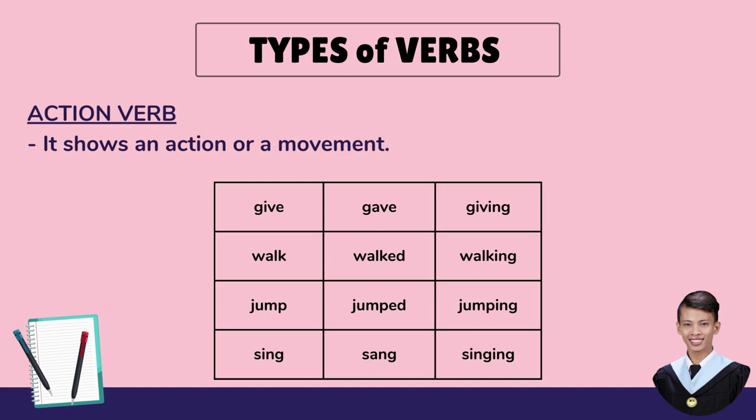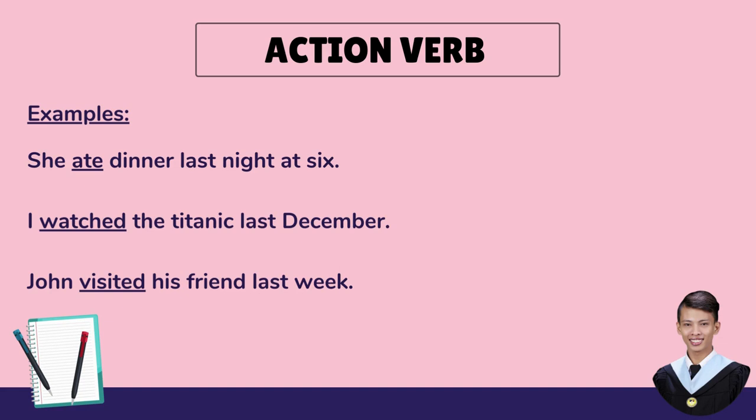Let's take a look at these examples. She ate dinner last night at 6. I watched the Titanic last December. John visited his friend last week. The underlined words ate, watched, and visited are action words — there was an action or movement that happened. She ate dinner. I watched the Titanic. John visited his friend.